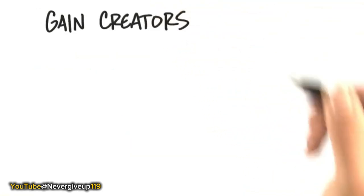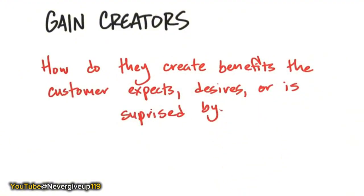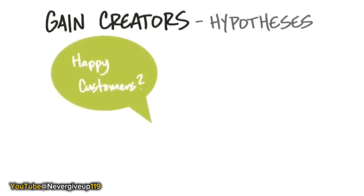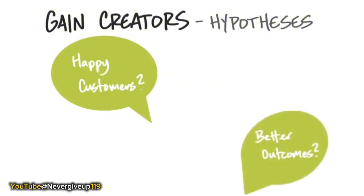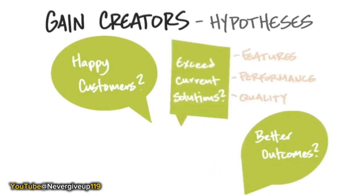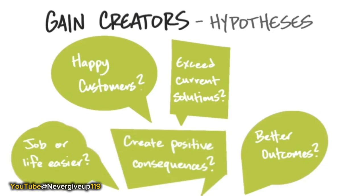The last piece in detail is what gain are you creating — what are the benefits the customer expects, desires, or is surprised about? You're going to start with your hypotheses: what makes the customer happy? Are you going to create savings in time, money, and effort? Is this a product that delights them because the outcome is better than they could imagine — better quality, more of something, or less of something they didn't like? Does it simply outperform current solutions? Does it make your customer's job or life easier? Or does it create positive consequences — social or business — that a customer desires? The only way to understand this is outside the building in front of lots of customers.